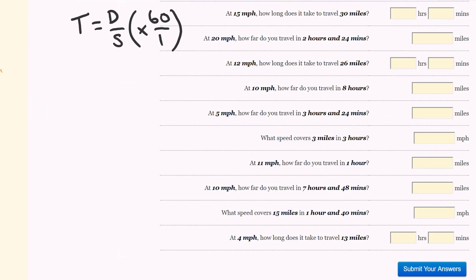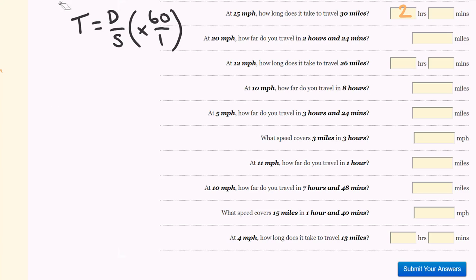Second lot of questions. This time I'm not going to separate them into types, I'm just going to start answering them. At 15 miles per hour, how long does it take to travel 30 miles? This is a time question: time equals distance over speed. Distance is 30, speed is 15, which equals 2 — that's 2 hours. That's one I'd hope you'd be able to answer without the formula: 15 miles is 1 hour, 30 miles is 2 hours, 45 miles is 3 hours.